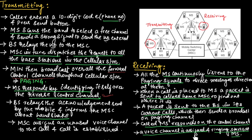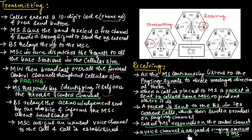The base station relays the acknowledgement sent by the mobile and informs the mobile switching center about the handshake. Handshake means the mobile is ready to accept the incoming call. Then the mobile switching center assigns an unused voice channel to the call, and the call is established between the mobile stations.